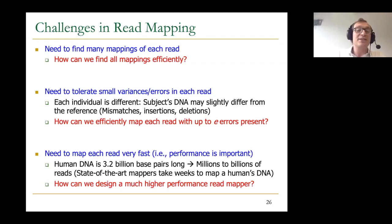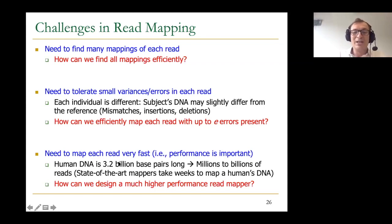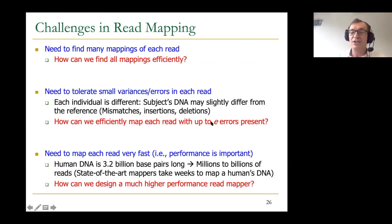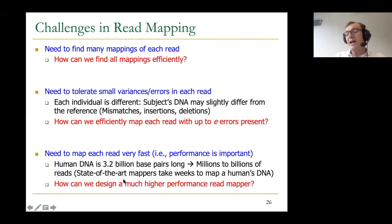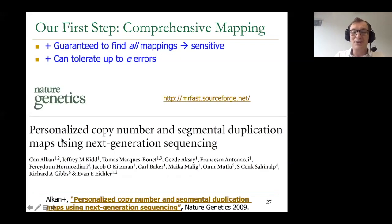On top of this, we need to map each read very fast — performance and efficiency are very important. Human DNA is very long, leading to millions to billions of reads. State-of-the-art mappers take weeks to map a human DNA as a function of E and the scoring function. The key question becomes: how can we design a much higher performance read mapper?